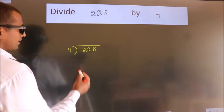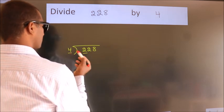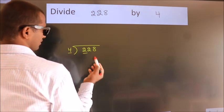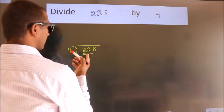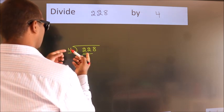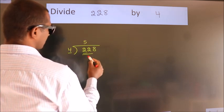Next, here we have 2. Here 4. 2 is smaller than 4, so we should take 2 numbers. 22. A number close to 22 in the 4 table is 4 fives 20.